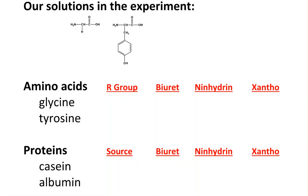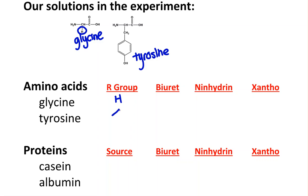Let's look at the different solutions of amino acids and proteins that we will be testing during the experiment. This first one is glycine, and this amino acid is tyrosine. We need to look at those structures to interpret or predict some of these results. Those are the two amino acids we're testing. On glycine, our group is just that hydrogen right there. On tyrosine, we have a phenyl ring. So when we have a test that requires that, it'll be positive, and for glycine it won't be.